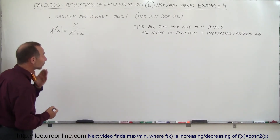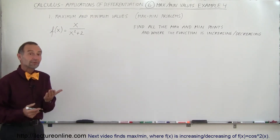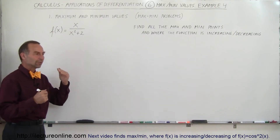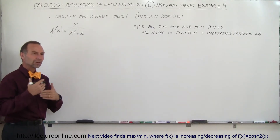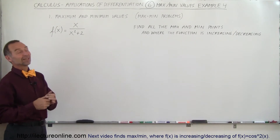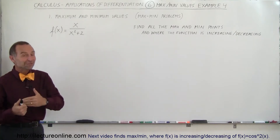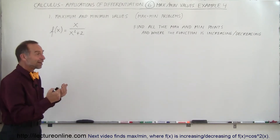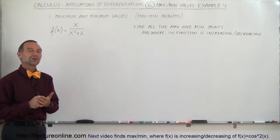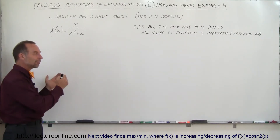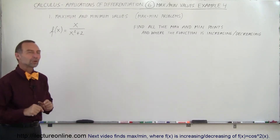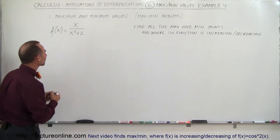What we want to do here is first take the derivative, because the maximum and minimum values can be found where the slope is equal to 0. So we take the derivative, set the derivative equal to 0, and we'll find the points where the slope is 0.